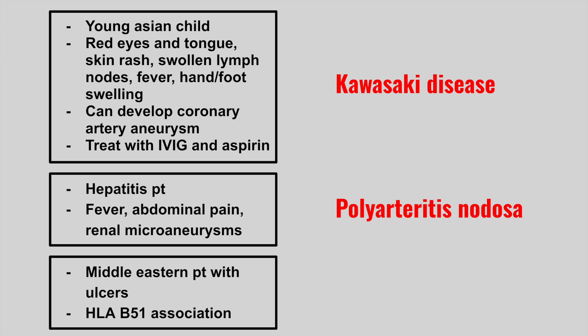Next, we have a Middle Eastern patient with ulcers, and there is an association with HLA-B51. So this is Behcet syndrome. Remember, ulcers can happen anywhere — if you see a patient with ulcers in the mouth or the genital region, think of Behcet syndrome.